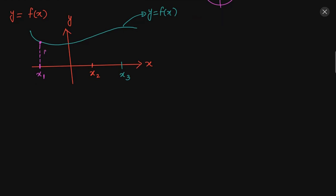The height of x1 corresponds to f(x1), and in this graph this point is (x1, f(x1)). Similarly, x2 has a certain height — when we put this value, it gives us the height f(x2), and this point is (x2, f(x2)). For x3, we can also show this on the graph: the height will be f(x3), and the complete point is (x3, f(x3)).